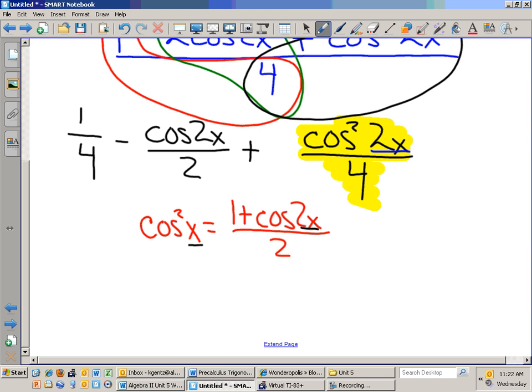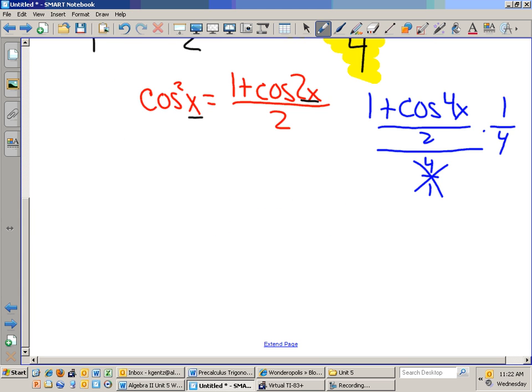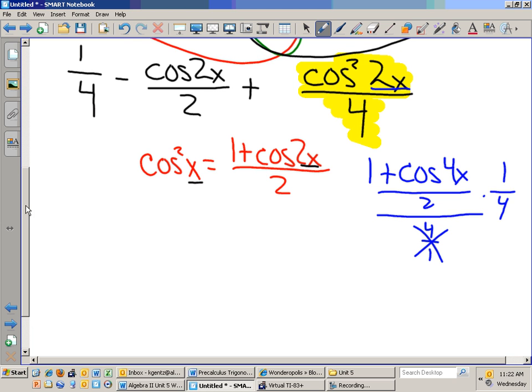So, I'm just going to work with this piece right here. I have a 1 plus cosine of 4x over 2, so I made my substitution, and that is all over 4 over 1. Multiply by my reciprocal, and what do you have in the denominator? 8. So, if we write this out now, again, I still have the 1 over 4 minus the cosine of 2x over 2 plus 1 plus cosine of 4x over 8.